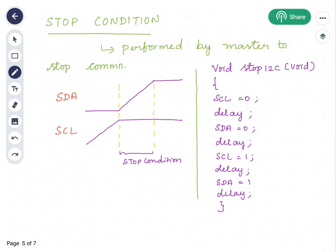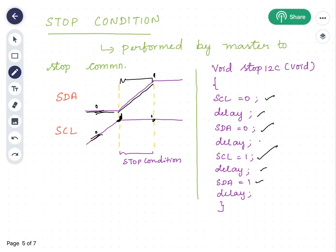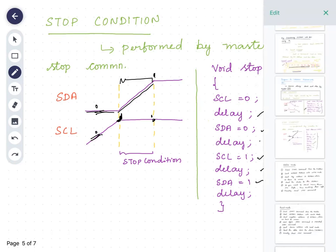Similarly, the stop condition is also initiated by the I2C master. In the stop condition, initially SDA remains at 0 and SCL is at 0. At the stop condition, SCL turns to 1 and SDA also rises to 1. In the program, SCL is initially 0; after a delay, SDA is also initially 0; then SCL changes to 1, and after a delay SDA also changes to 1. This is the program for the stop condition. Now we are familiar with how to start and stop a transmission between EEPROM and 8051.